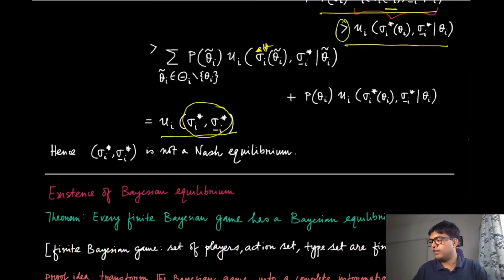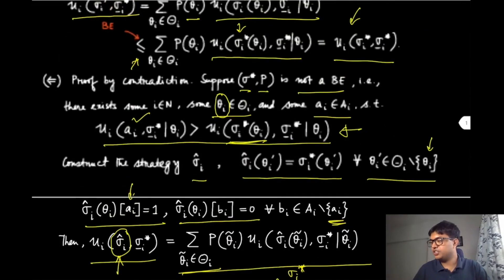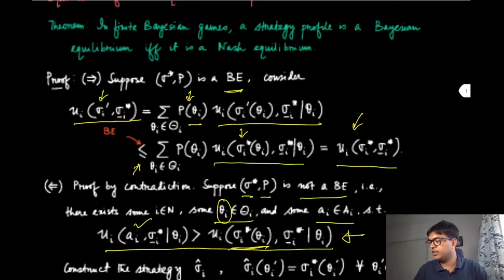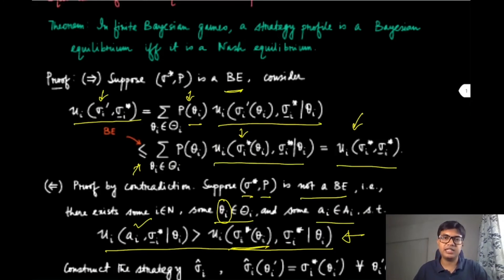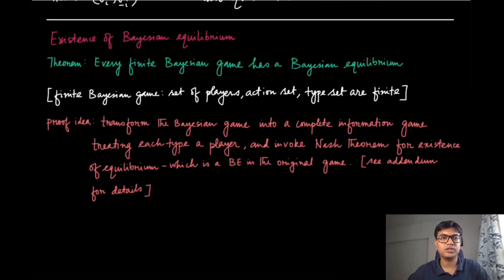We have proved both directions: if a profile is a Bayesian equilibrium then it is a Nash equilibrium, and if it is a Nash equilibrium then it is also a Bayesian equilibrium.